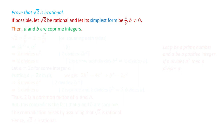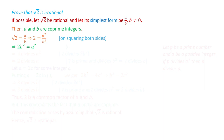We have assumed that root 2 is rational with simplest form a by b. So we can write square root 2 equals a by b. Squaring both sides of this equation, we obtain that 2 equals a squared by b squared. From this, we get 2b squared equals a squared. We call this equation 1.